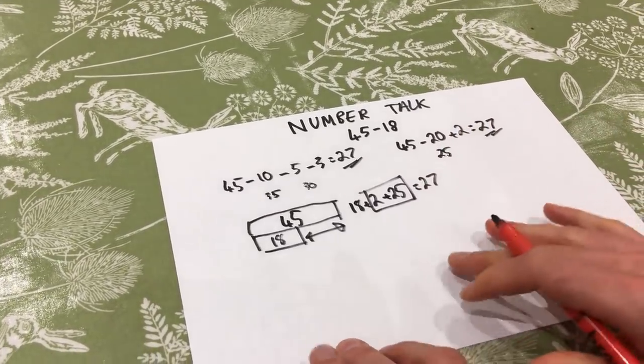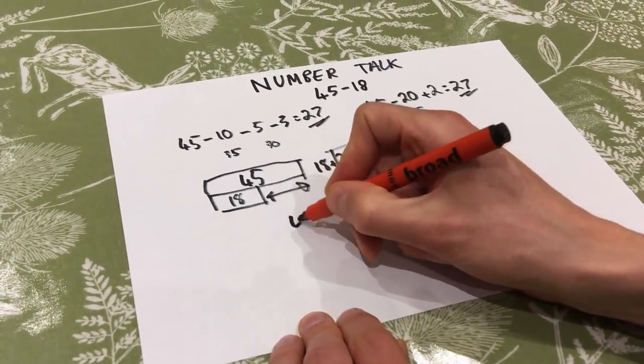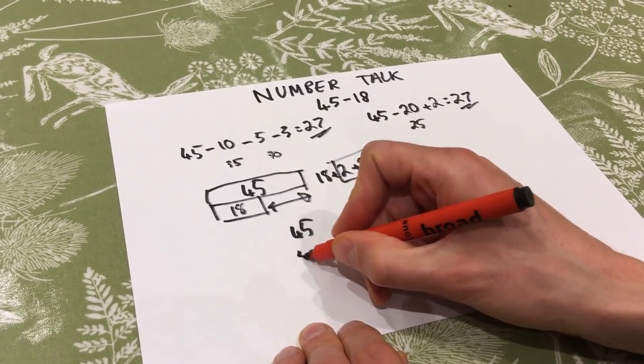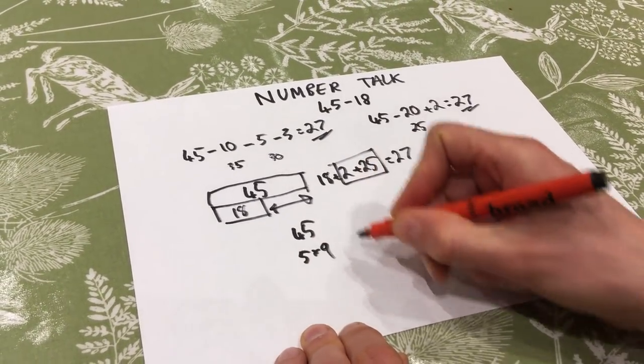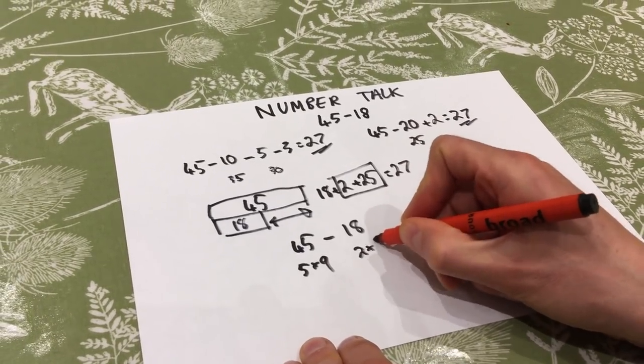I will never forget the one lad who said this. He said, well, 45, I noticed 45 I have got five lots of nine.